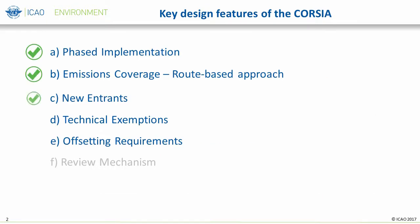As you may recall, there are six key design features of CORSIA. The previous presentation discusses the coverage of emissions for CORSIA offsetting requirements based on the participation of states in different phases and their route-based approach. Now that you understand the coverage of emissions by CORSIA, the next concept to understand is how the emissions coverage changes each year compared to the baseline.